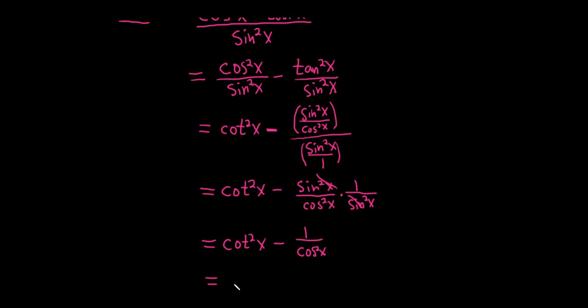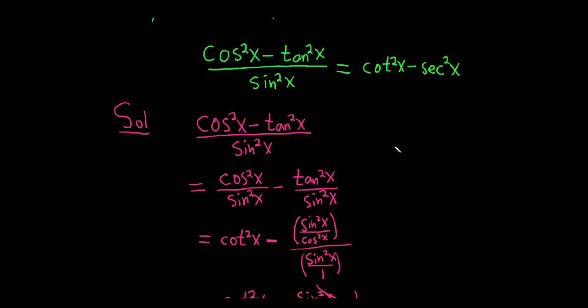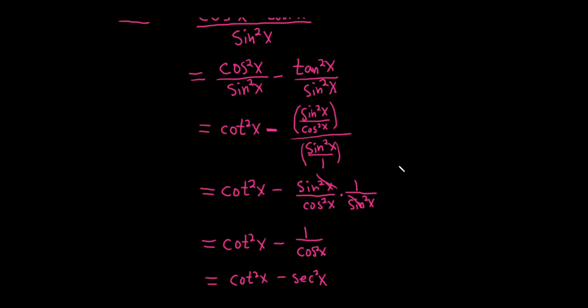So finally, this will be cotangent squared x, and then 1 over cosine is secant. So 1 over cosine squared will be secant squared x. And I believe that's what we wanted to show. It is really nice. So that's it. So I hope this video has been helpful. Good luck.